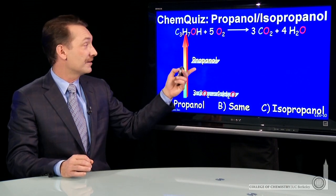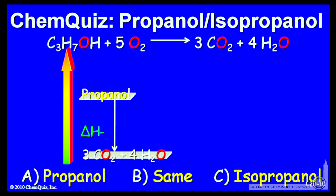Well, in fact, it does. Propanol will burn to form carbon dioxide and water. But if you isomerize propanol to isopropanol, we said that was endothermic. So isopropanol must be higher on the enthalpy scale than propanol.